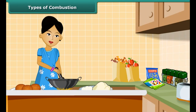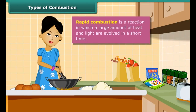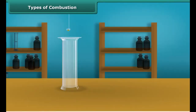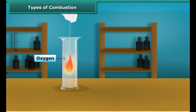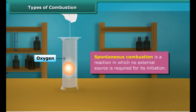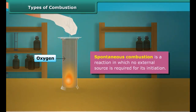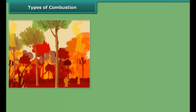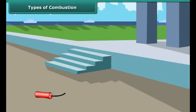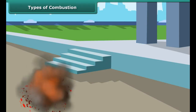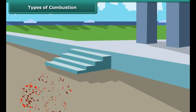Let us now look at types of combustion. A lady ignites LPG in a kitchen to make food — LPG burns quickly, producing a lot of heat. This type of combustion is called rapid combustion. When white phosphorus is left in the open for some time, it catches fire on its own; this type is called spontaneous combustion. Other examples of spontaneous combustion include forest fires and fires in coal mines.